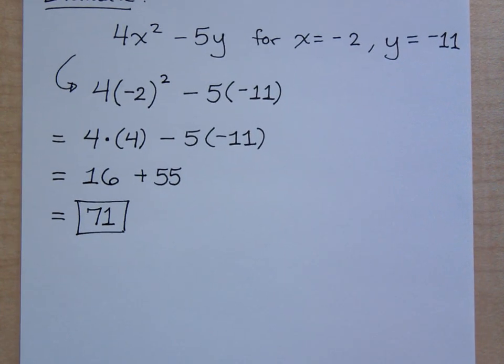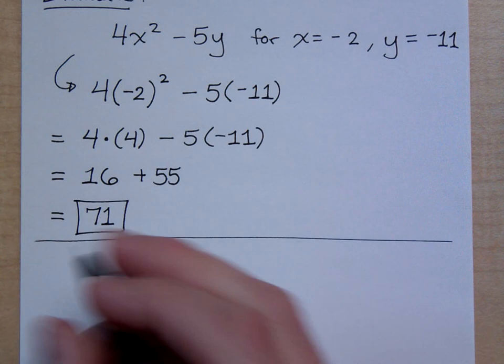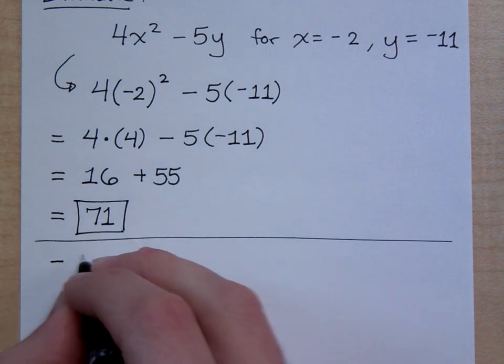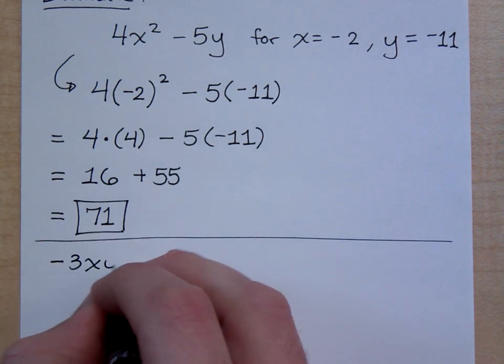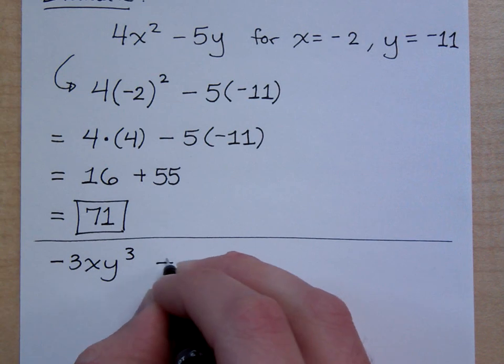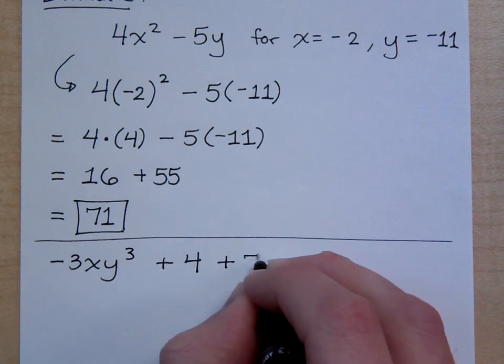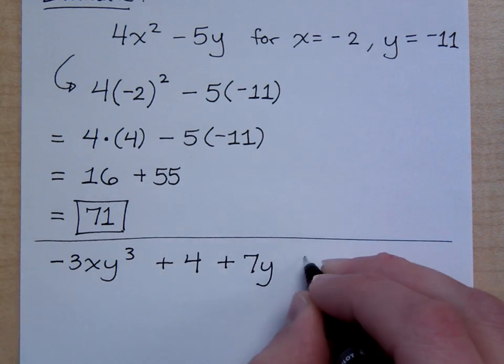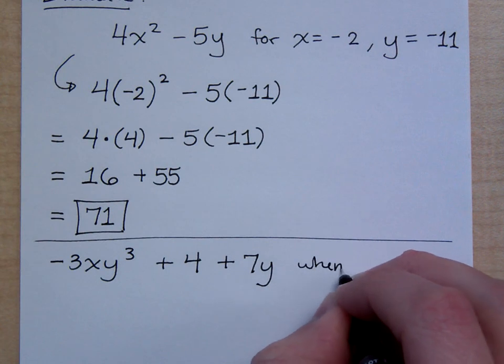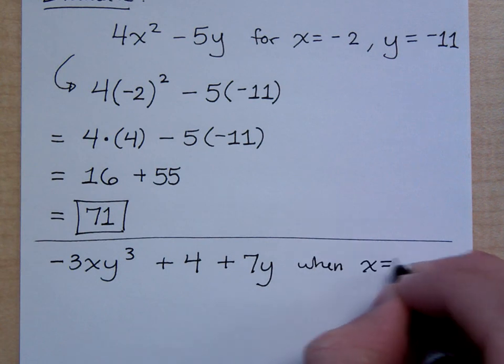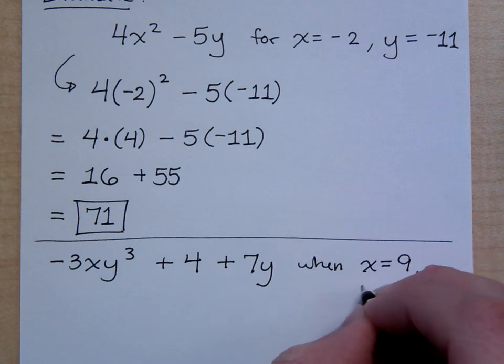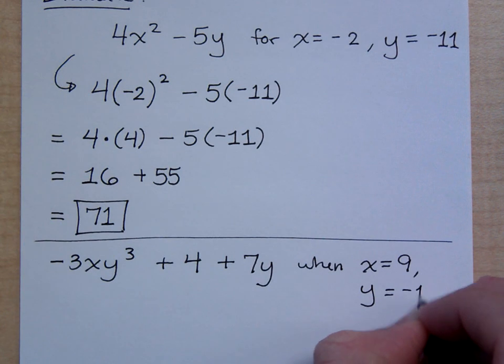Well, let's try another one. If I take negative 3xy to the third plus 4 plus 7y, evaluate this when x equals 9 and y equals negative 1.